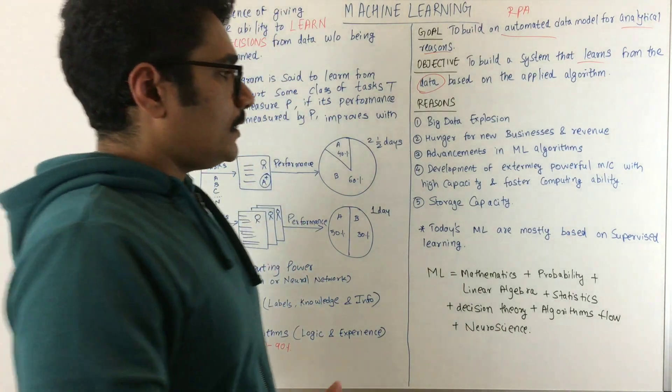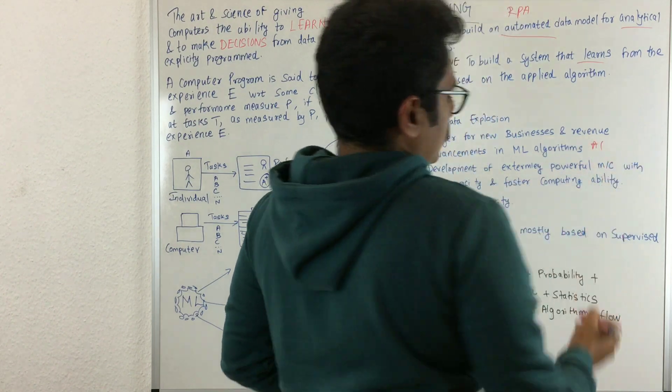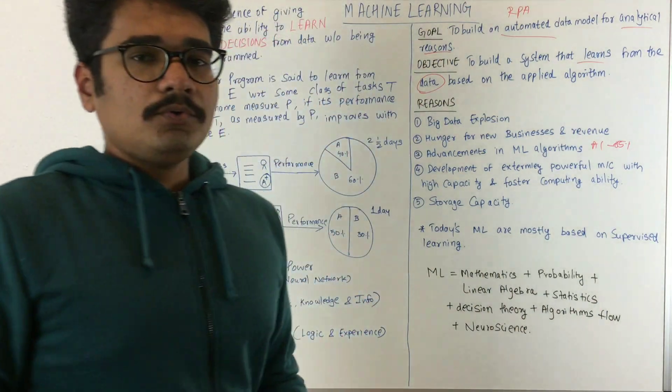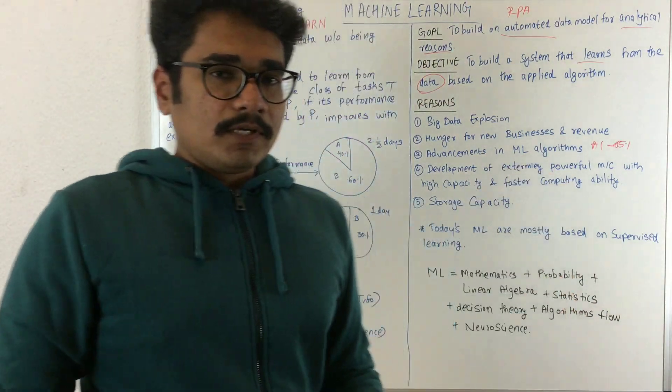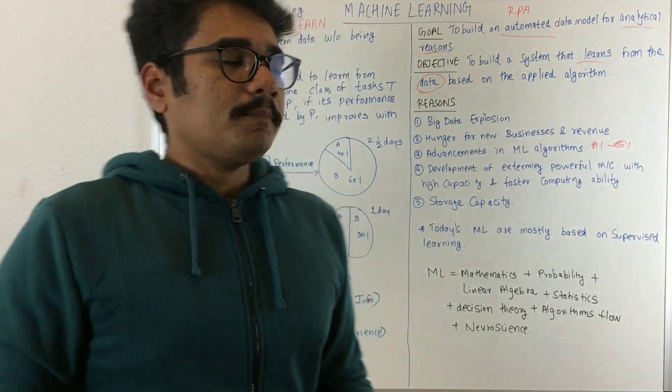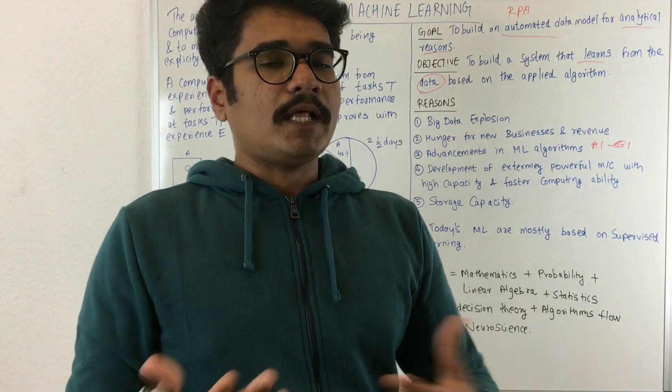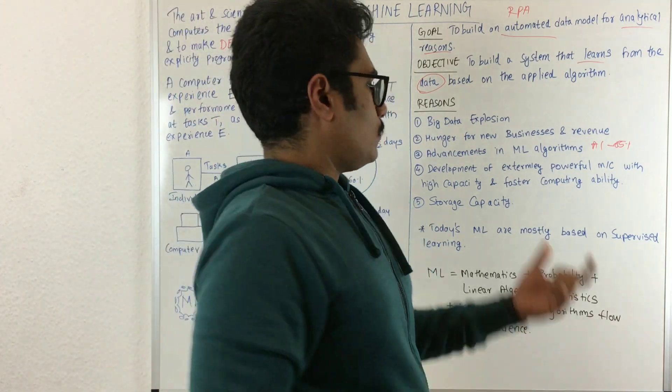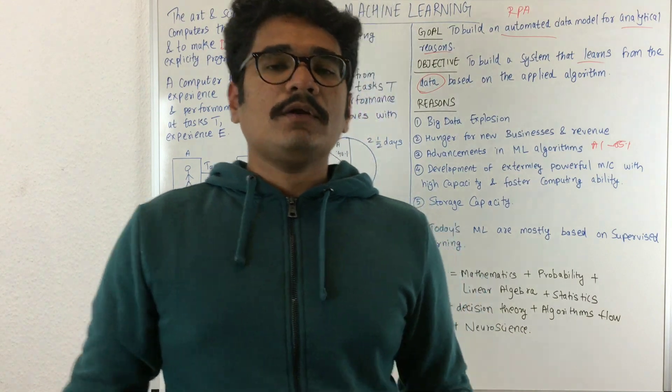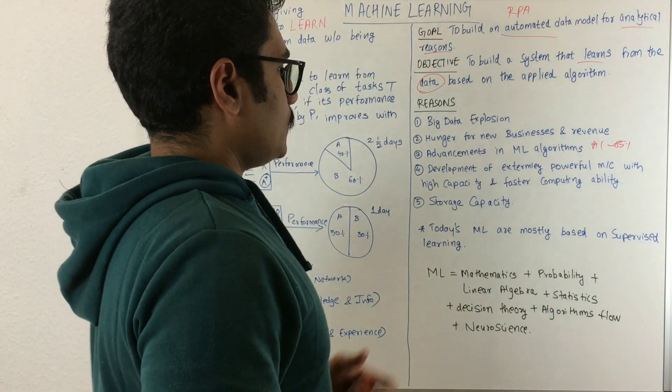Third is the advancement in machine learning algorithms. If you developed algorithm one with 65% accuracy, tomorrow if you want to run that system with the same algorithm, you will not, because you got 65%. You will advance or do modifications in that algorithm. Day by day, the number of machine learning algorithms is getting increased.